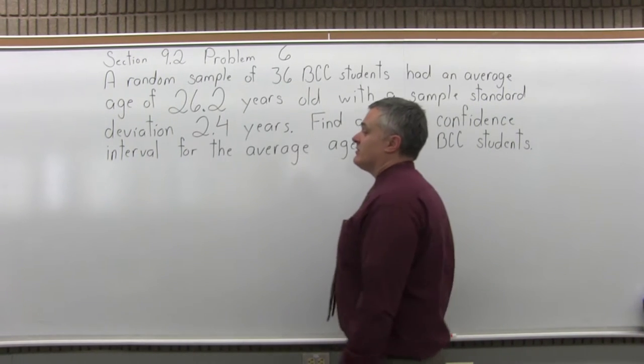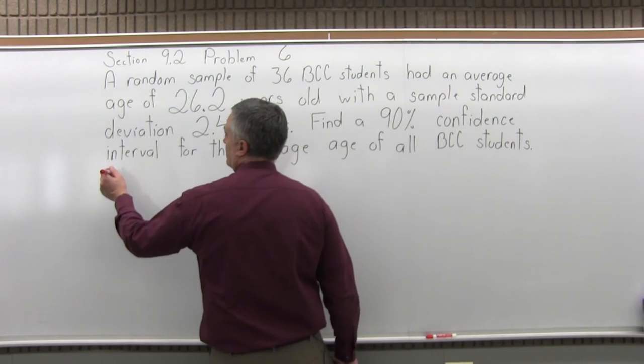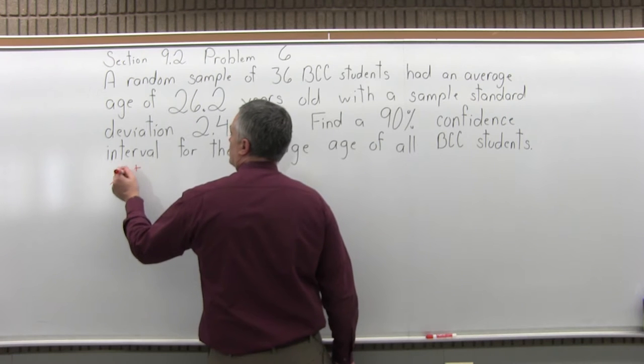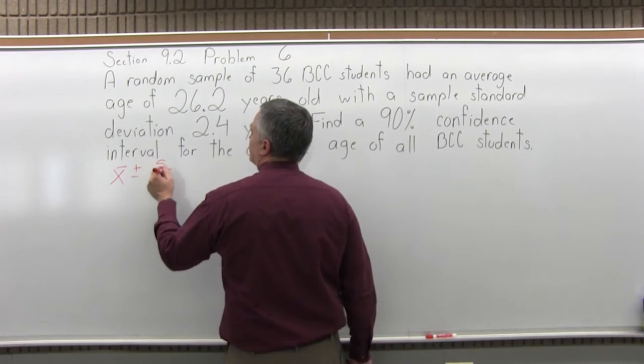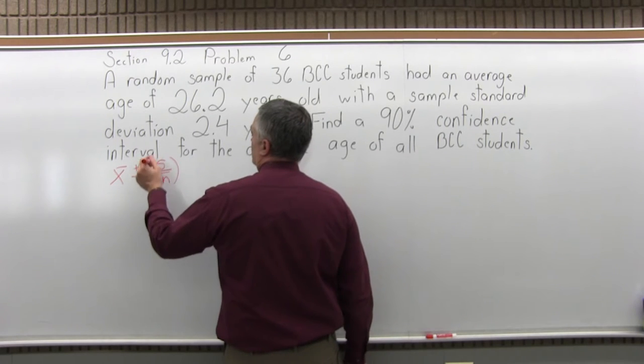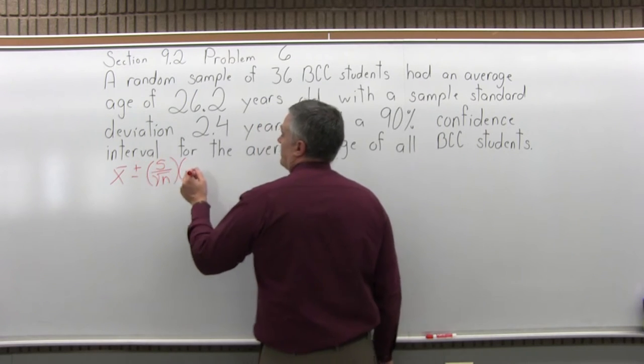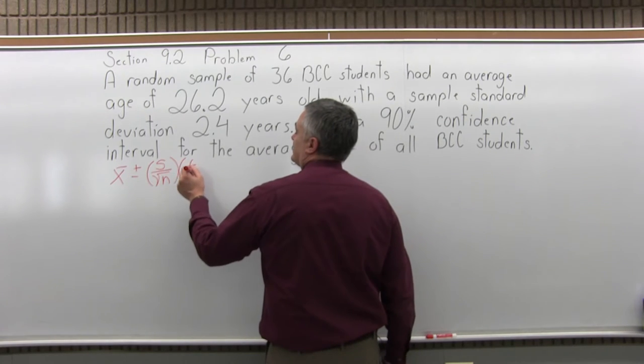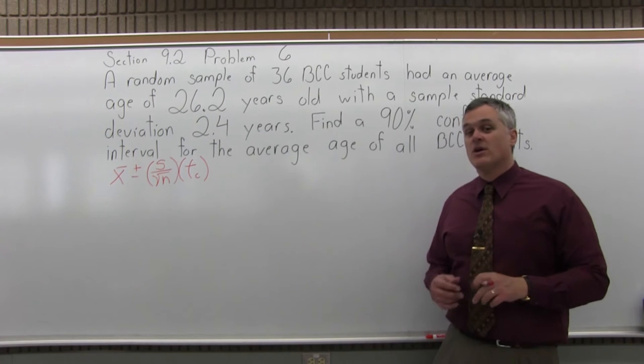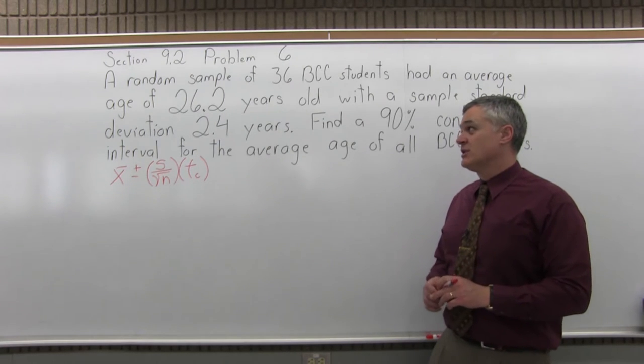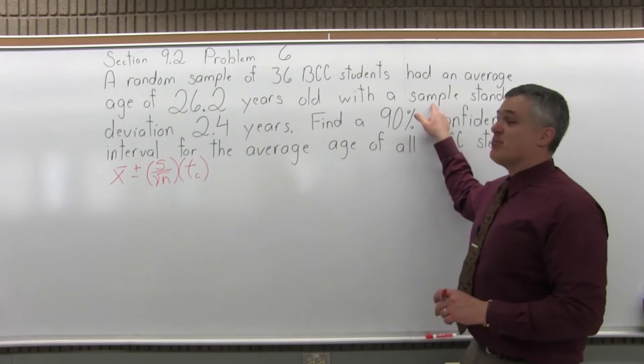Because this is a confidence interval, we use the confidence interval formula and we're going to use the version where we do not know the population standard deviation. So we put in S for the standard deviation, not sigma, and our confidence coefficient is T sub C, not Z sub C. That's what you would use if you know the population standard deviation. We only know the standard deviation of the sample.